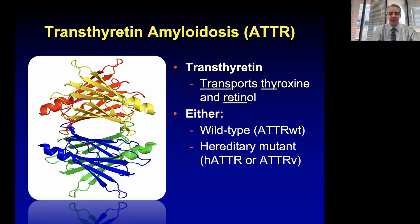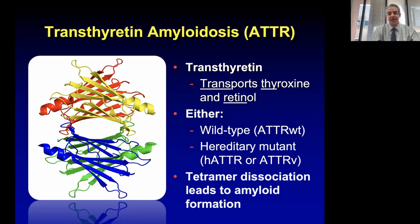When we talk about the pathological abnormality of this disease, it's really this tetramer. In the ribbon diagram, each color dissociating leads to amyloid formation.